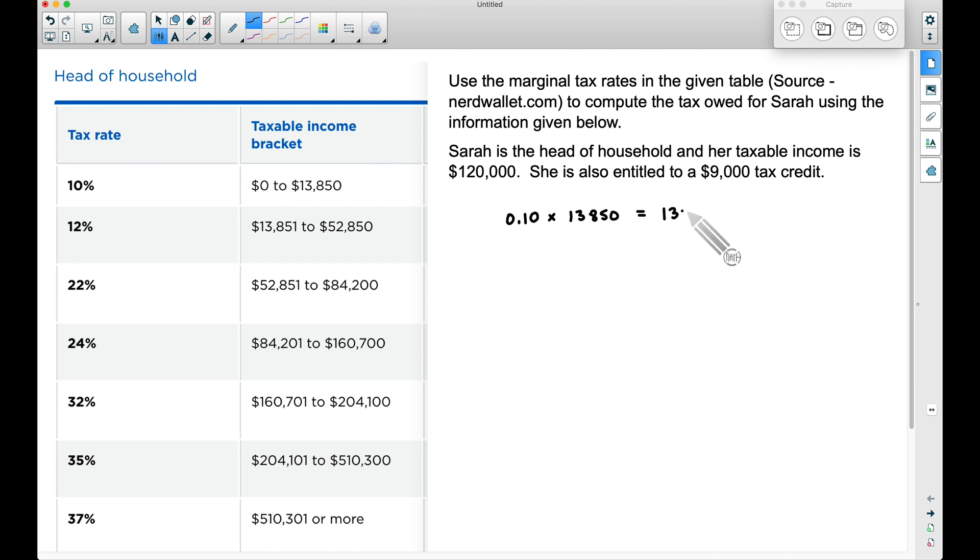Finding 10% of $13,850, she will pay $1,385 for that first $13,850. Here's the deal: the tax owed on this amount of money here is this much money. Now we have to keep on going through this table because clearly she's going to pay more taxes since she made more money.